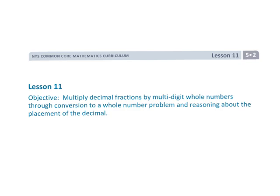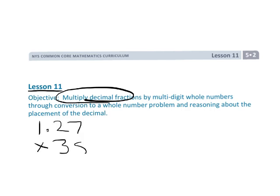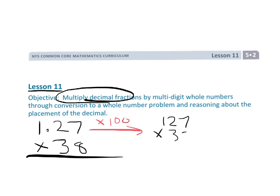And that is lesson 11, where we're using that standard algorithm to multiply decimals. The difference being, like if you got 1.27 times 38, the difference is we're going to be kind of explicitly multiplying by 100 to turn it into 127 and then multiplying. And then whatever our answer is, we're going to divide by 100 to return the answer to its proper place.